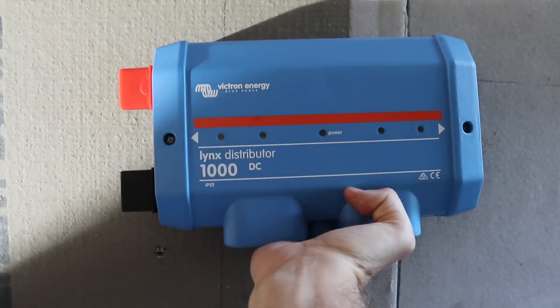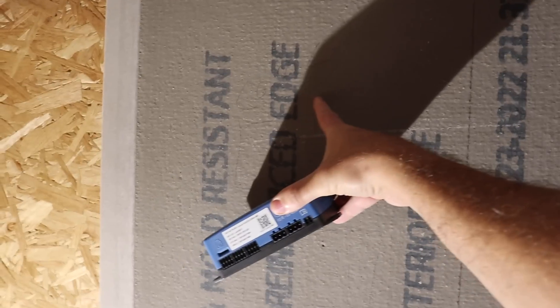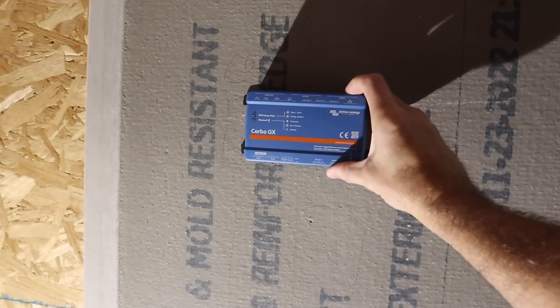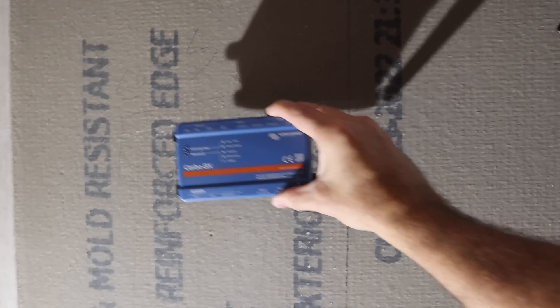For us, we are going to have the two multi plus inverters next to each other here with 10 centimeters between them. And then right straight below them, we are going to put our lynx distributor. To the right of everything, we are going to have our MPPT and our sub panel here. And then all of our additional communication equipment like our Cerbo GX is going to be over here next to the other inverter.